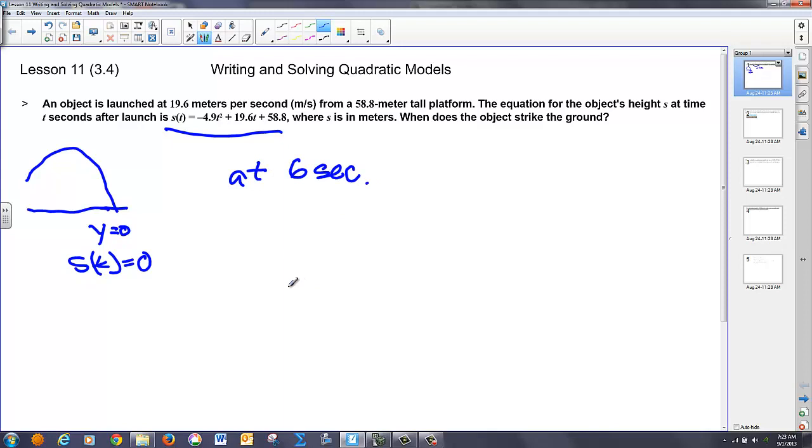And turns out at 6 seconds it hits the ground. We could also use a quadratic formula negative b plus or minus the square root of b squared minus 4ac all over 2a to find out where that value is equal to zero. But this is a little bit quicker.